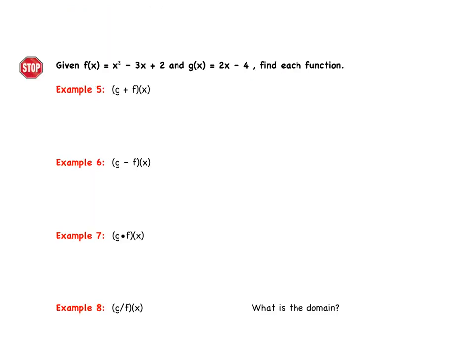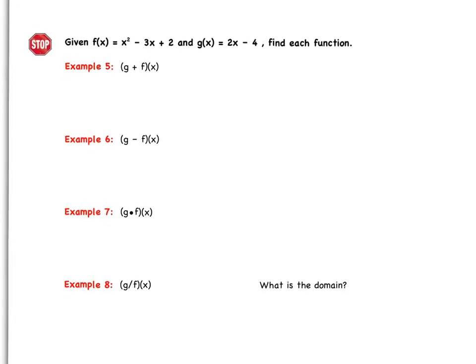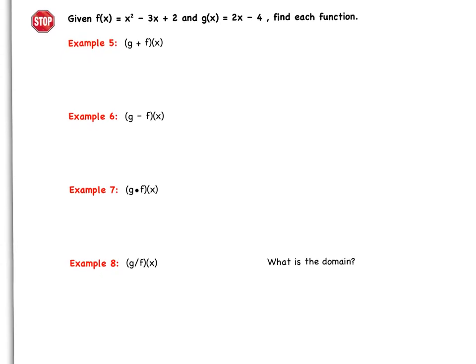Let's move on to the next page. So this next example, or these next four examples really, are going to be you trying what we just talked about on your own. So given f(x) = x² - 3x + 2 and g(x) = 2x - 4, I want you to add, subtract, multiply, and divide these two functions and state your final answer. And with example number 8, also provide the domain. That one's a little trickier. So pause the video. Try these on your own.